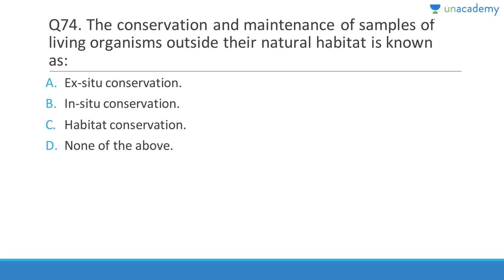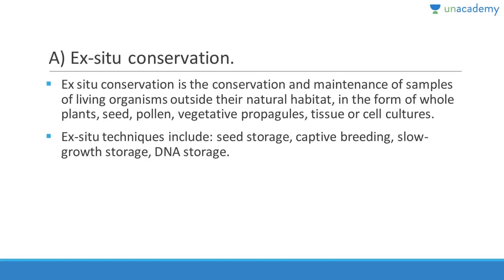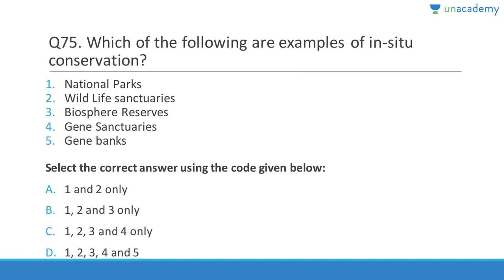Question 74: Conservation and maintenance of living organisms inside their natural habitat is called in-situ conservation; outside is ex-situ conservation. Ex-situ examples include zoological gardens, botanical gardens, DNA storage, slow-growth storage, captive breeding, and seed storage. When taken outside the natural habitat — away from wildlife sanctuaries, national parks, or sacred groves — it is ex-situ.